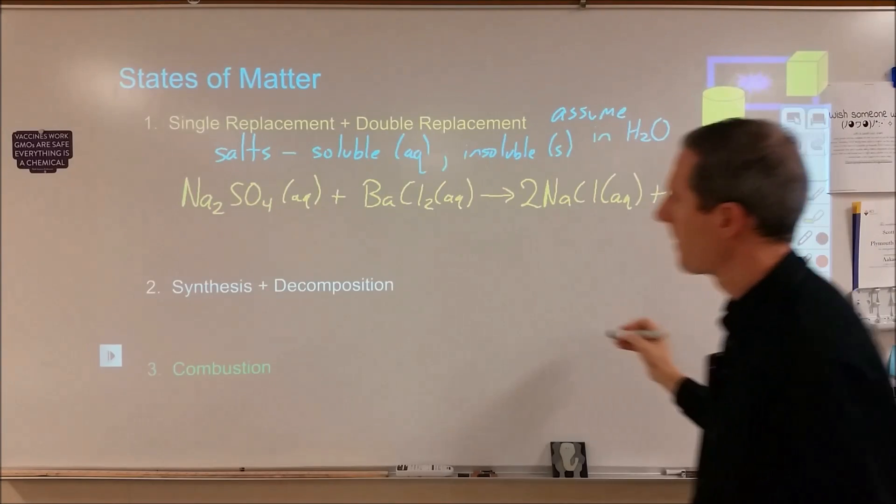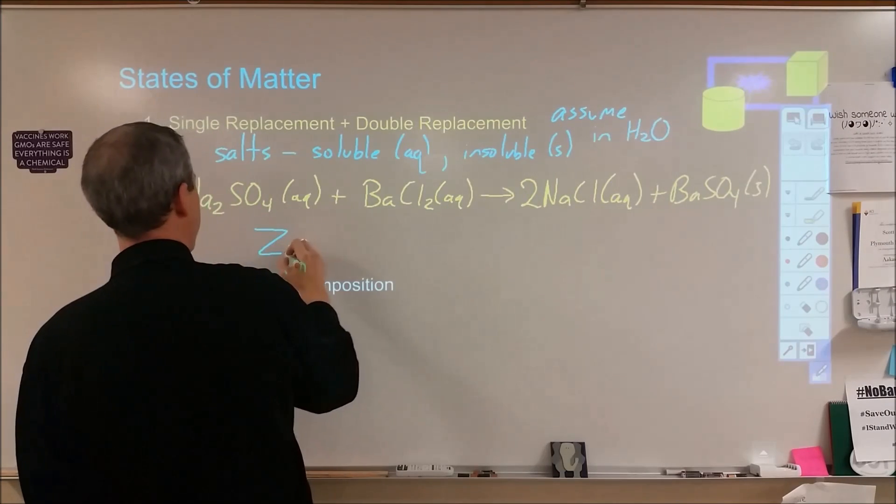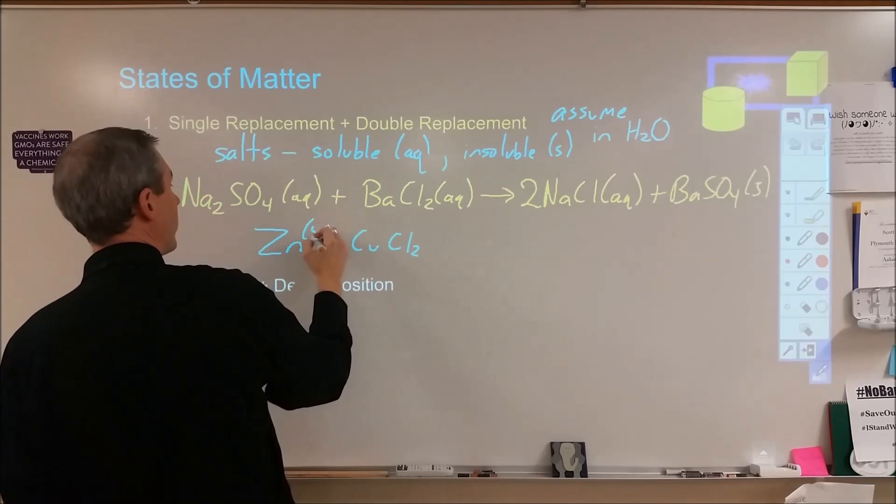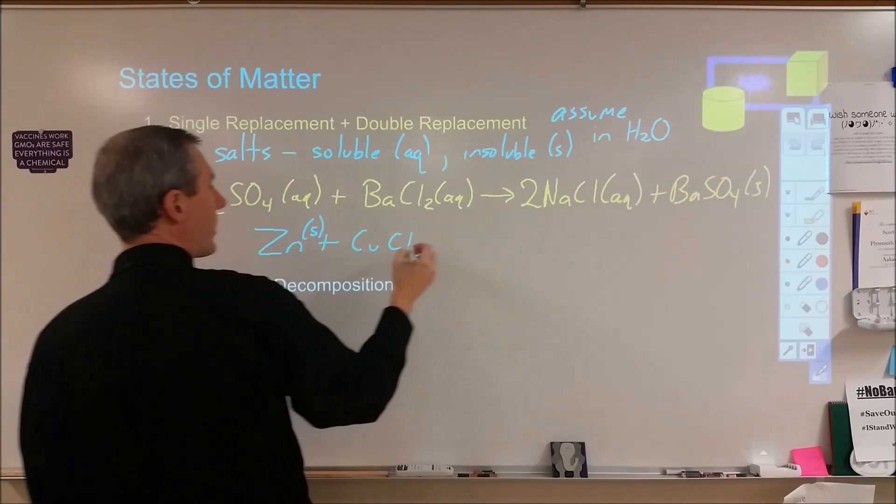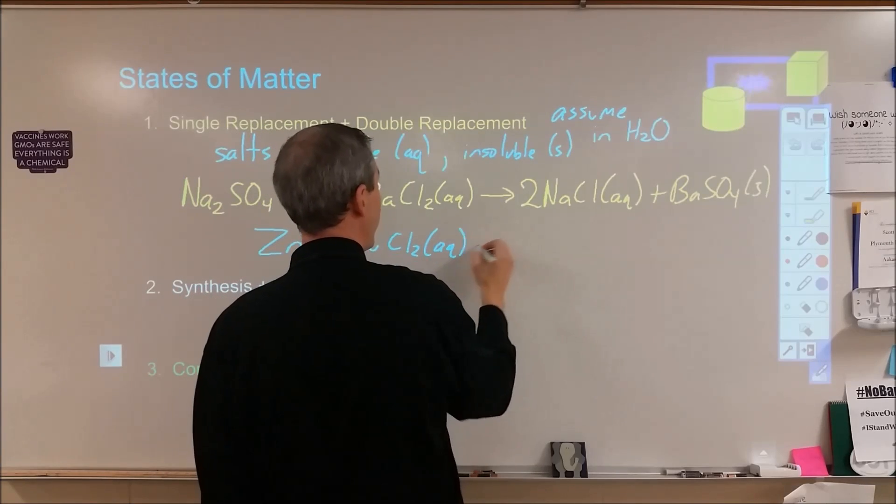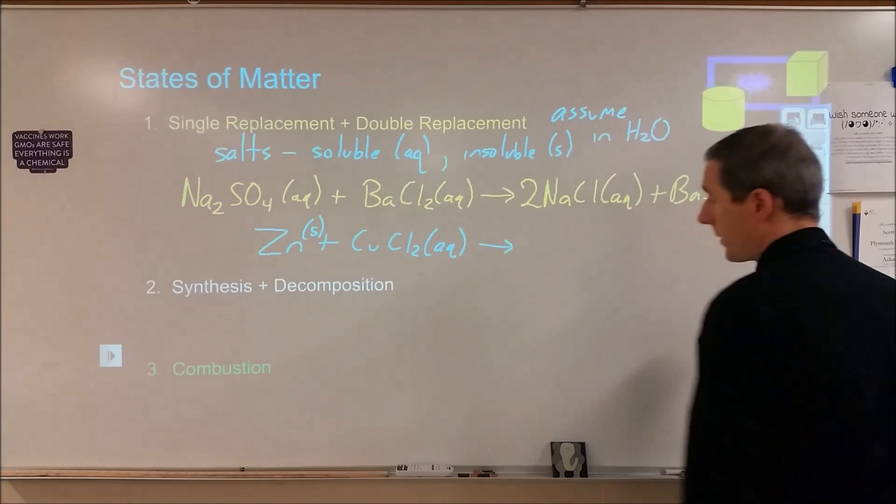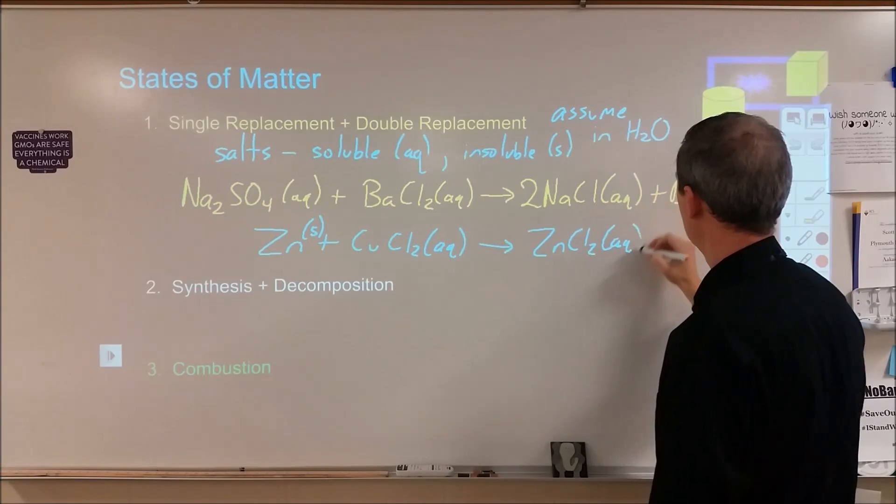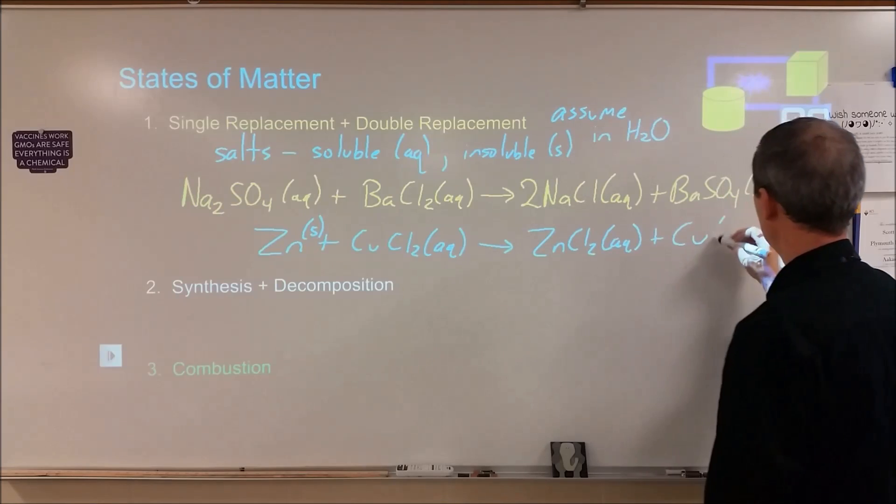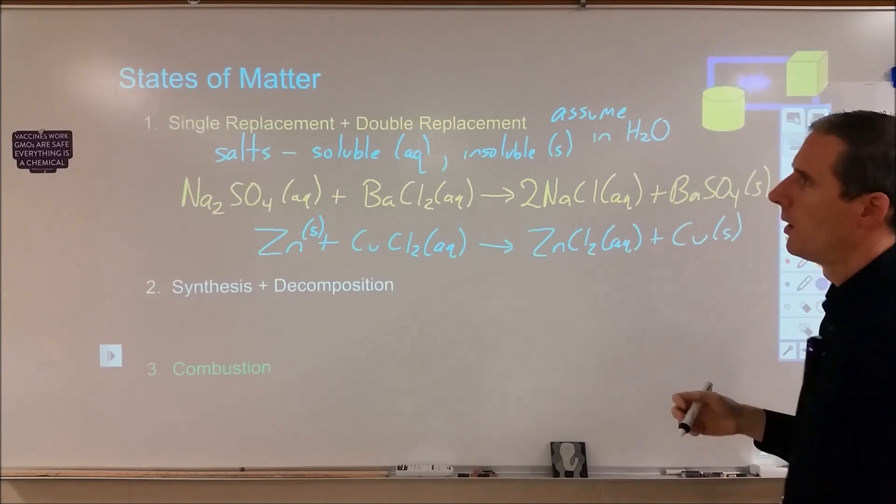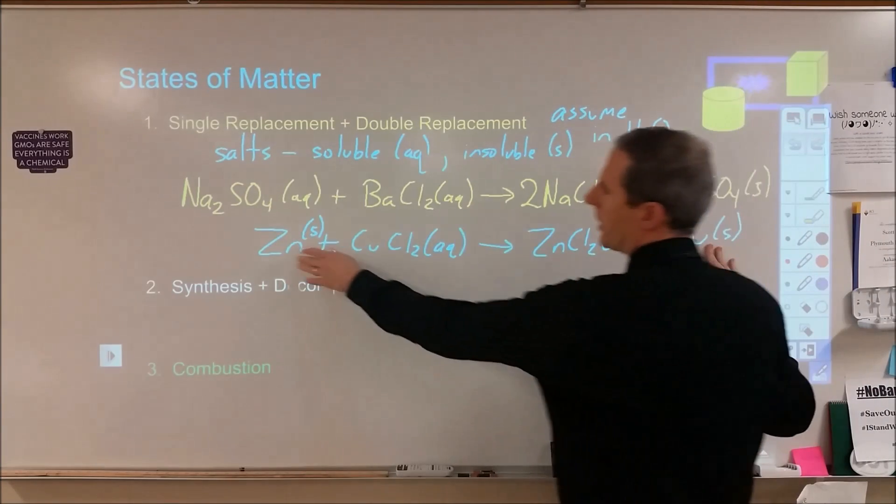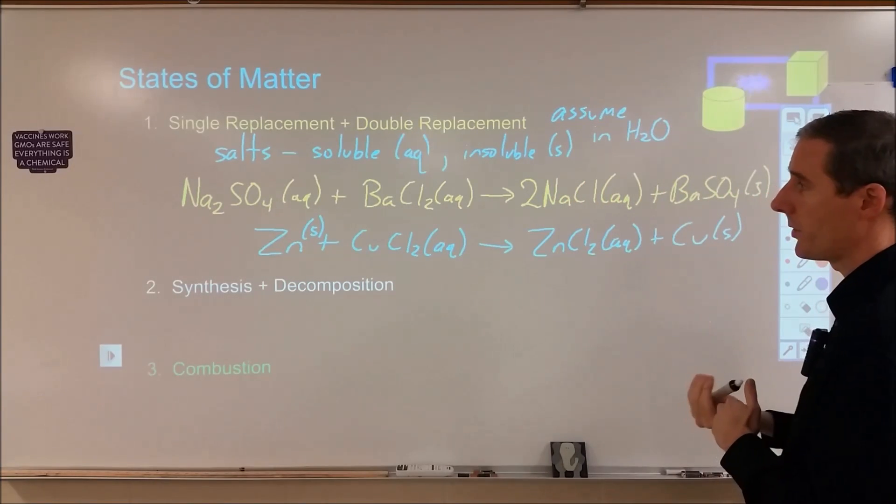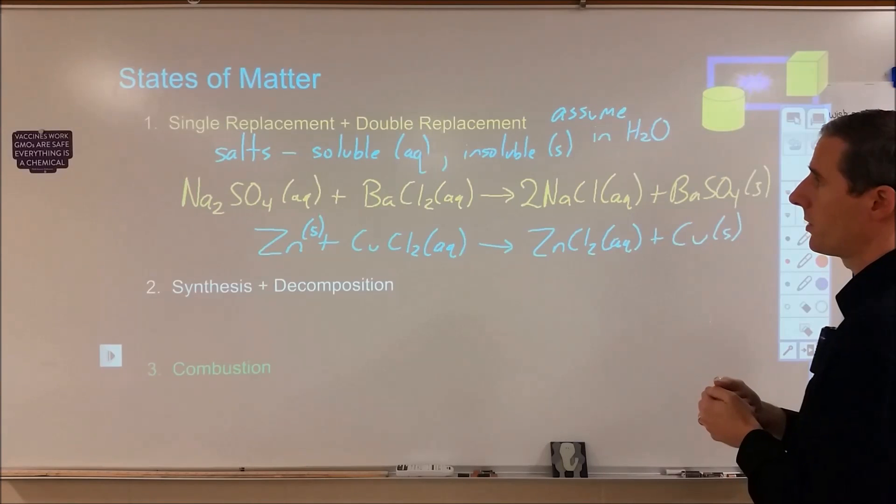If we were to do a single replacement, say zinc plus copper chloride, CuCl2. The zinc is a solid, it's just a metal. It's not going to dissolve in water. The copper chloride is soluble in water. And then that's going to turn into zinc chloride, ZnCl2, which is soluble in water, plus copper metal, which would be in a solid form. So for single replacement, the elements are going to get treated separately, but for your ionic compounds, you're going to look at whether they're soluble or insoluble, and they're either going to be aqueous or solid.